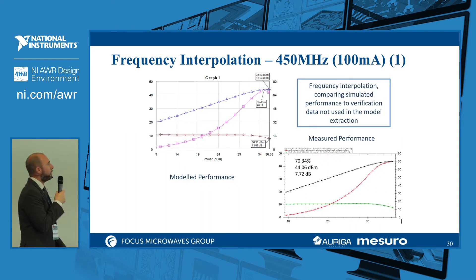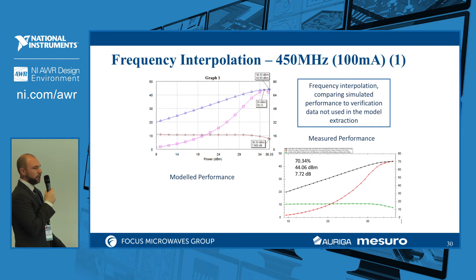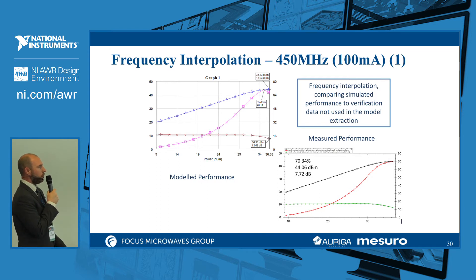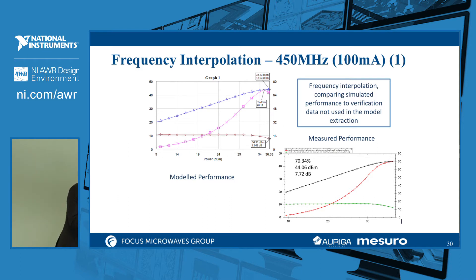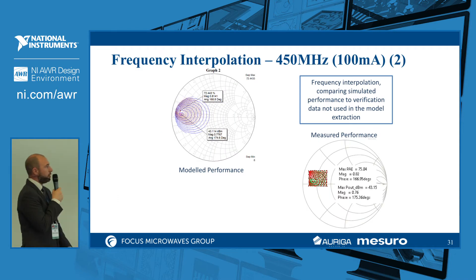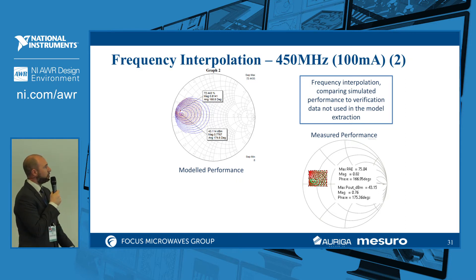For the 450 MHz frequency interpolation example, we see the same trend: very good fit for gain and output power, and very good fit for power added efficiency except at the highest drive level where it breaks apart slightly. In the impedance space, the match is again very good, not quite as close as at 350 MHz but really not far away.